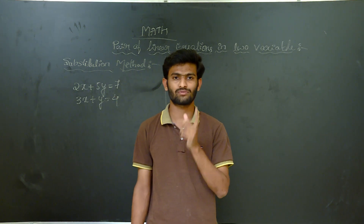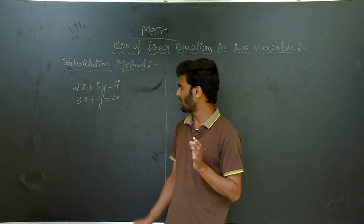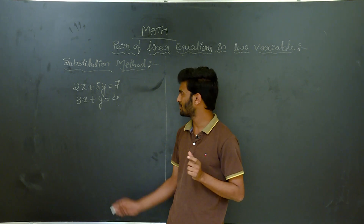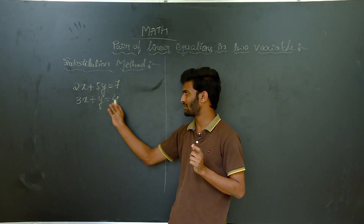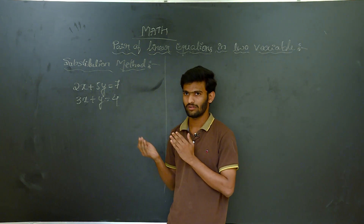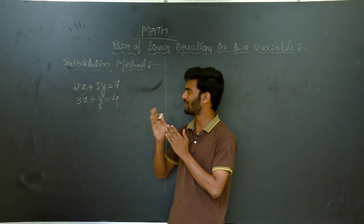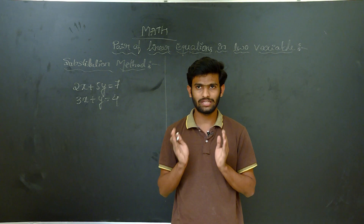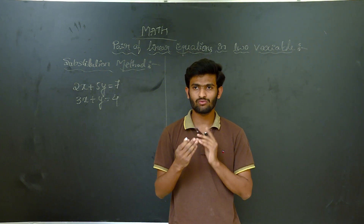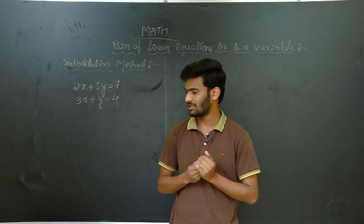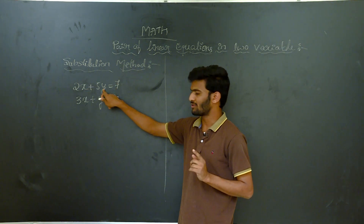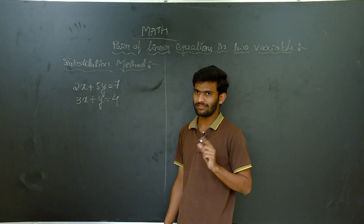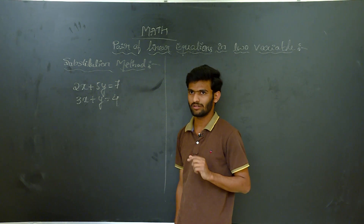The method is the substitution method. The name itself indicates that we have to substitute the value of either X or Y. Here we have two equations — equation 1 and equation 2. We take the value of X or Y from one equation and substitute it into the other, converting the equation into a linear form with only one variable, which is easier to solve.